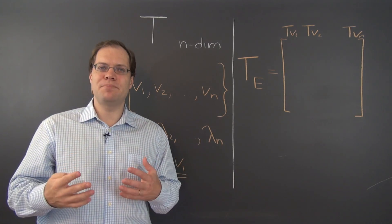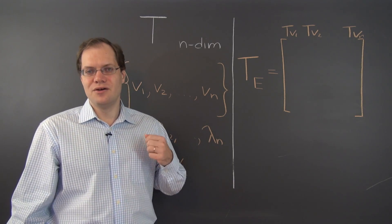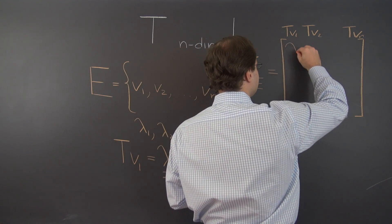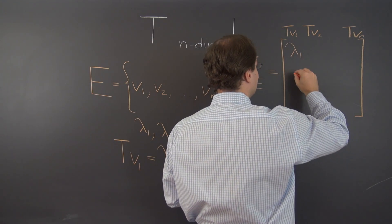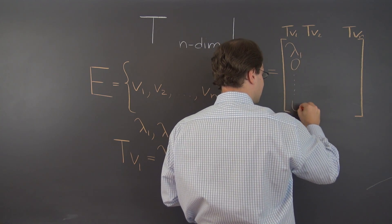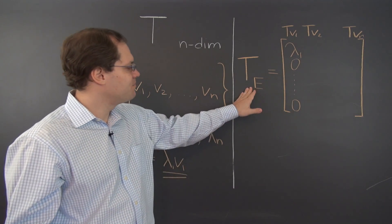And of course, that decomposition is unique. I'll leave it up to you to explain to me why that decomposition is unique. So the first column is, there is no way around it, lambda 1, 0, 0. That has to be the first column of this matrix.